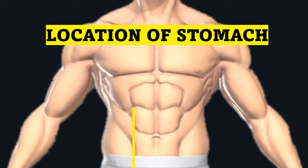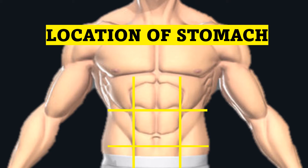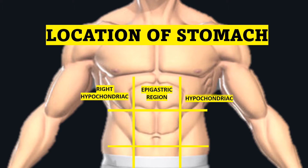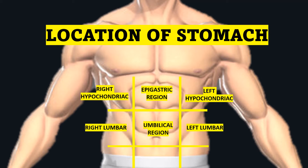To understand the location of the stomach, we first divide the abdomen into nine quadrants: the right hypochondriac region, epigastric region, left hypochondriac region, right lumbar region, and in the center the umbilical region.